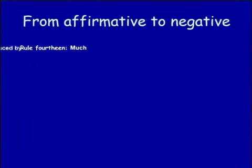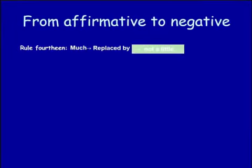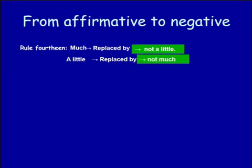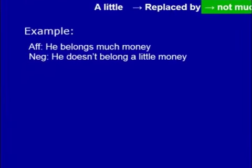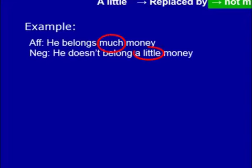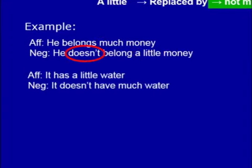Rule number fourteen: 'much' is replaced by 'not a little,' and 'a little' is replaced by 'not much.' Note that 'much' and 'a little' are used with uncountable nouns. Make the verb negative using 'not.' Where there is no auxiliary verb, use a helping verb. For example: 'He owns much money' becomes 'He does not own a little money.' Another example: 'It has a little water' becomes 'It does not have much water.'